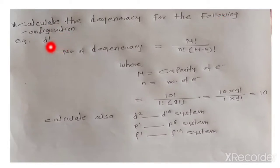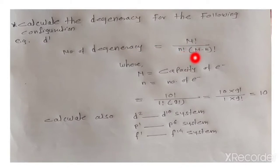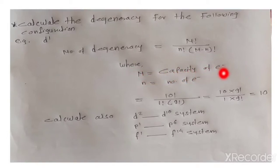First, to calculate the degeneracy for a configuration — the configuration may be D1, P1, or D2 system. The formula is: number of degeneracy equals N factorial divided by n factorial times (N minus n) factorial. Here, capital N is the capacity of electrons and small n is the number of electrons.